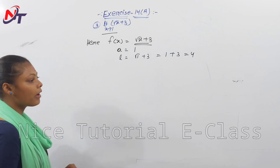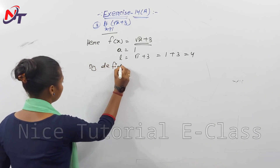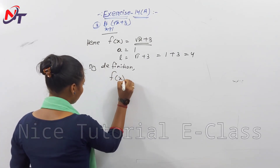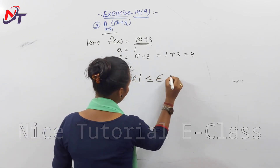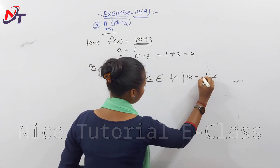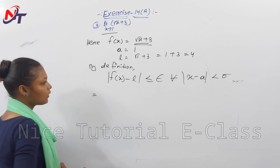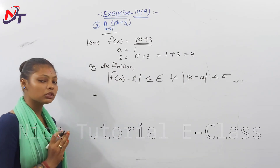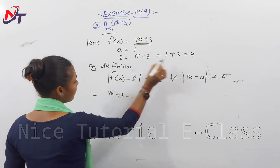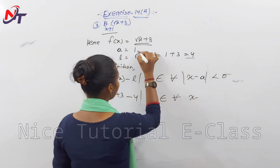Then, by the limit definition, f of x minus L must be less than epsilon for all x such that x minus a mod is less than delta. We put in the values: f of x is root x plus 3, and L is 4. So we need: mod of root x plus 3 minus 4 less than epsilon, for all x minus 1 mod less than delta.